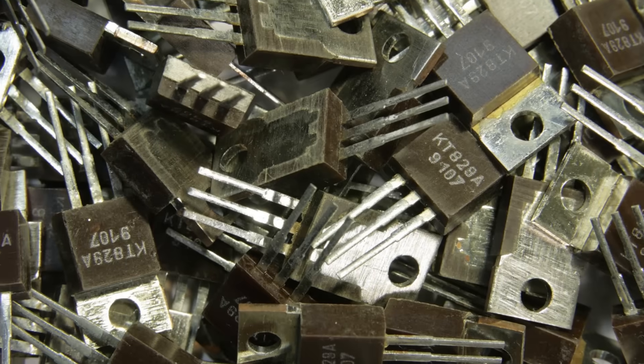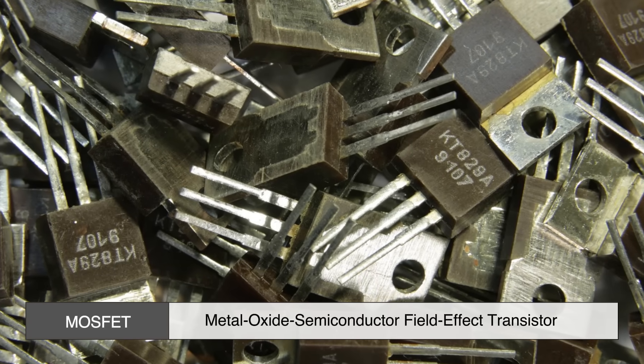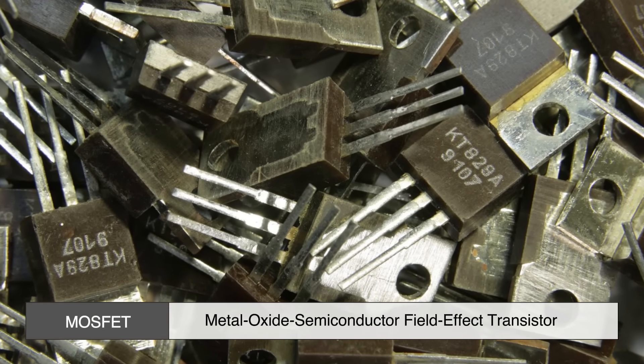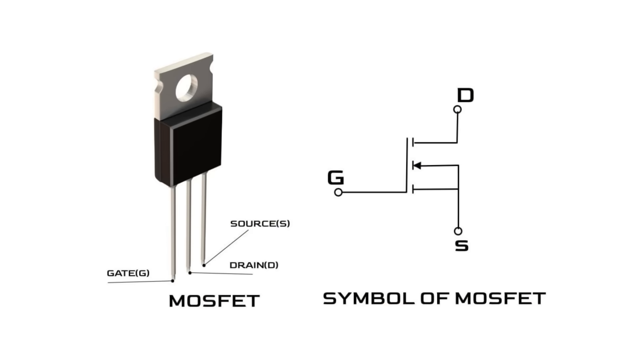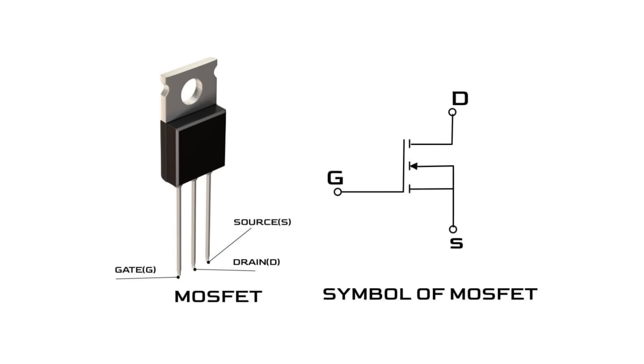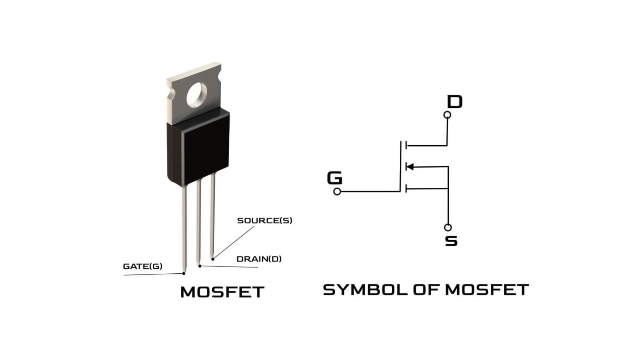The most common type is the MOSFET, short for Metal Oxide Semiconductor Field Effect Transistor. Don't worry about the long name, just remember it has three parts: the source, the drain, and the gate.